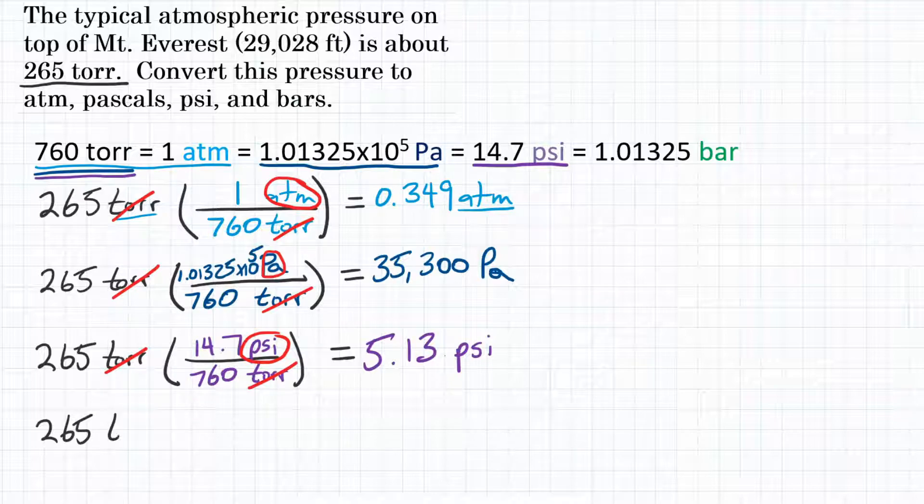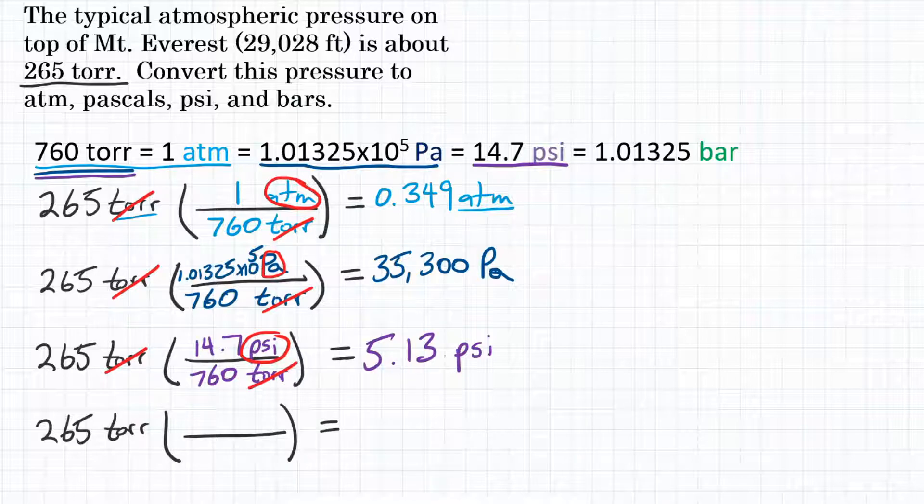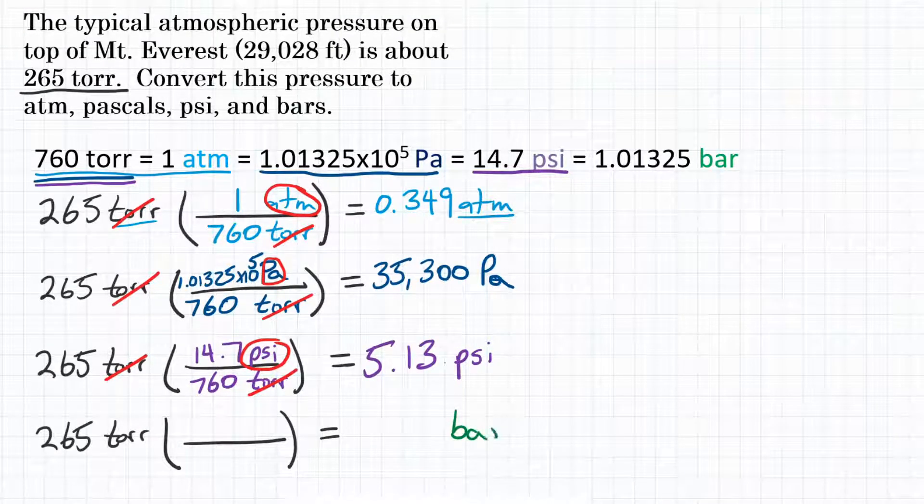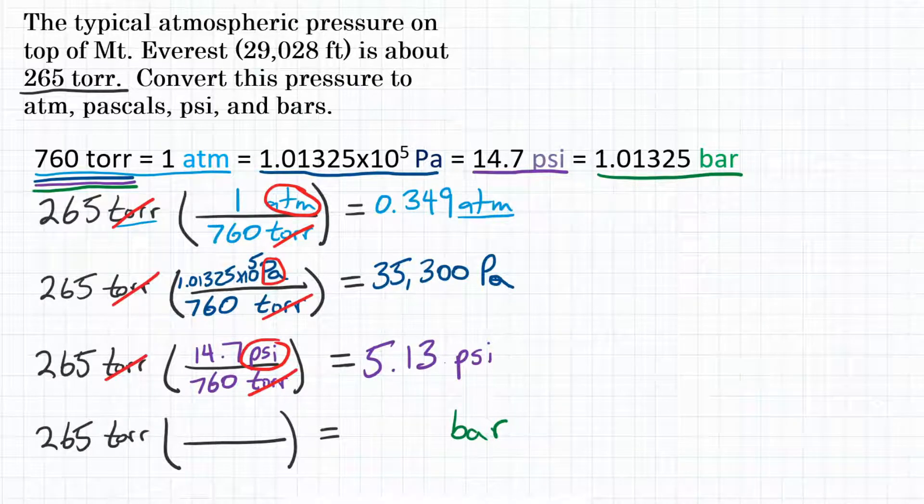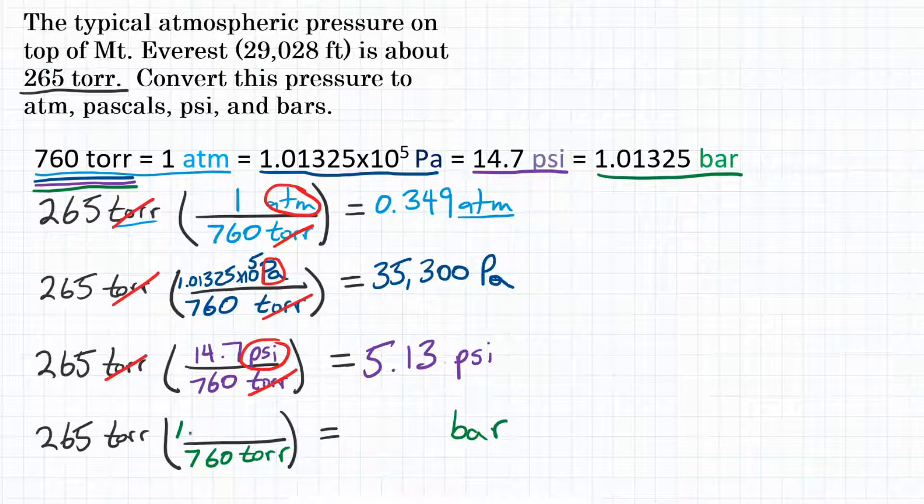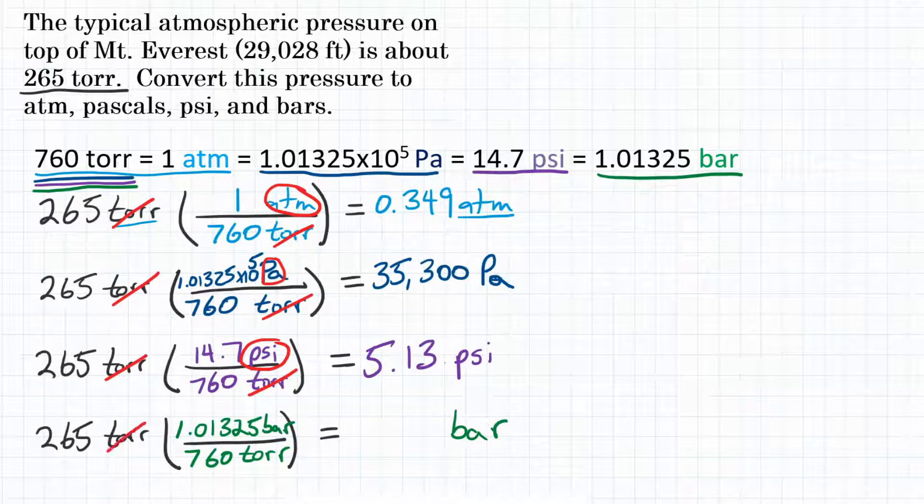265 torr, multiplying by our conversion factor to get to the unit of bar. So for our relationship, 760 torr is equal to 1.01325 bar. So for our conversion factor, torr is on the bottom, 760 torr. And bar will be on top, 1.01325 bar. And our unit of torr will cancel. And we will be left with bars. So now we can do the math here.